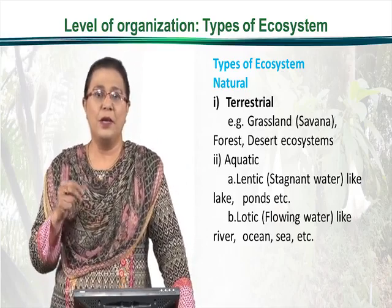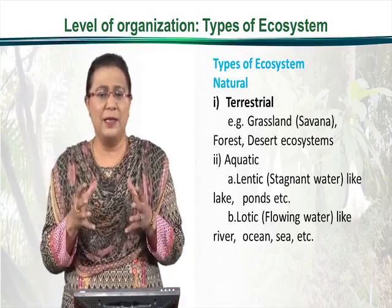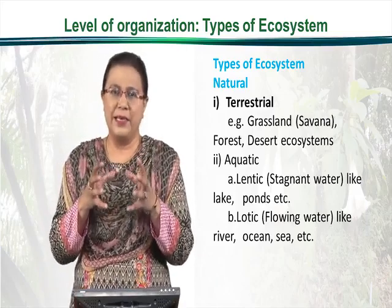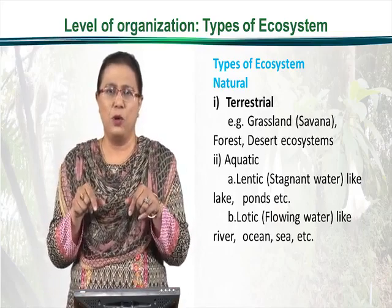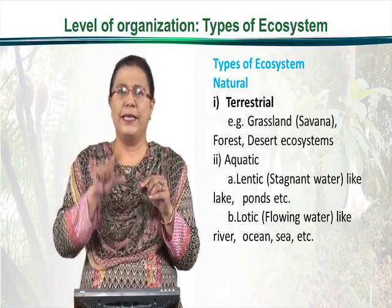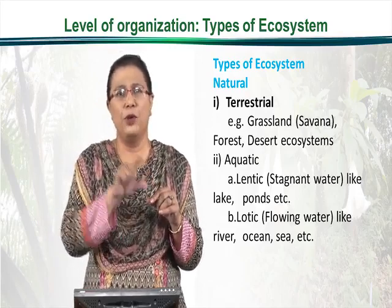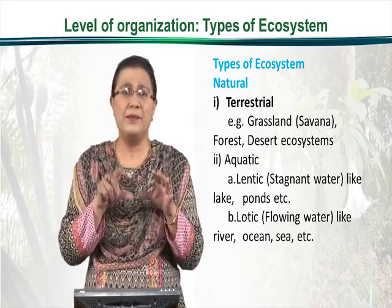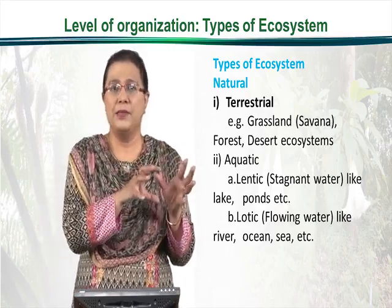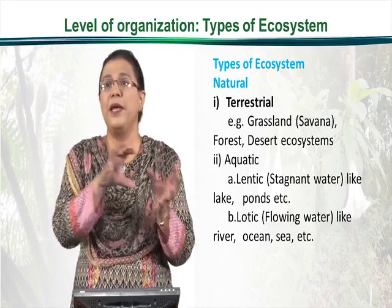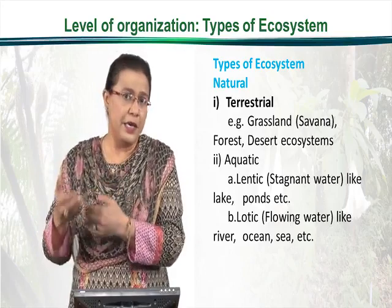As far as the aquatic ecosystem is concerned, we have the lentic ecosystem, which is a sort of stagnant water. This stagnant water has a specific and small boundary, a small food chain, and less diverse flora and fauna. These small stagnant water ecosystems may be present at some seasons and may disappear at others, but they may reappear again in another season.